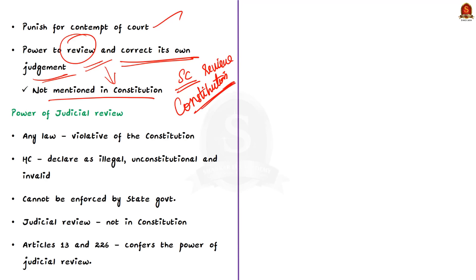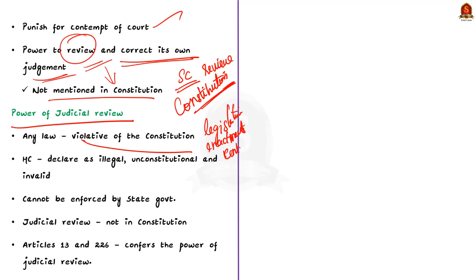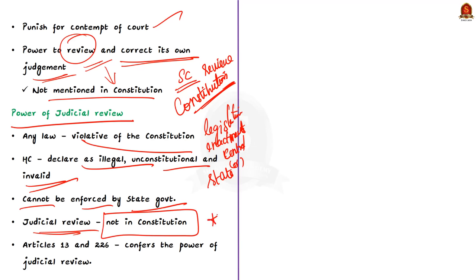An important point is that no specific power of review is conferred on the High Court by the Constitution, whereas the Supreme Court has been conferred the power of review by the Constitution itself. Judicial review is the power of a High Court to examine the constitutionality of legislative enactments and executive orders of both central and state governments. If the High Court finds that any law is violative of the Constitution, it can be declared illegal, unconstitutional, and invalid, and consequently cannot be enforced by the government. The words 'judicial review' are not used in the Constitution, but Articles 13 and 226 explicitly confer this power on the High Court.